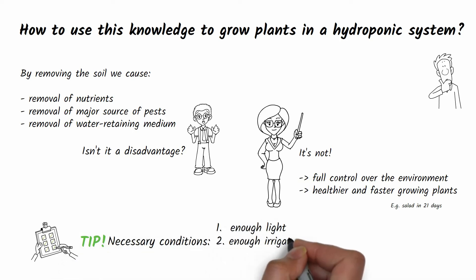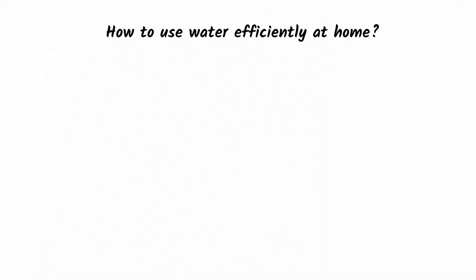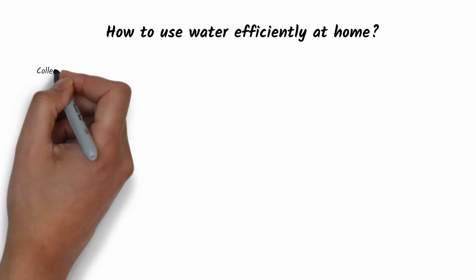If the plant does not thrive, check if it has got enough light, irrigation, and nutrients. Let's take a look at how to effectively manage these resources when growing plants hydroponically at home.